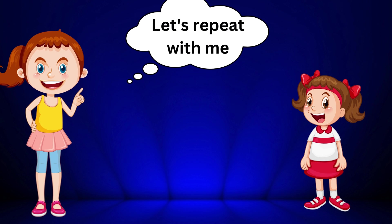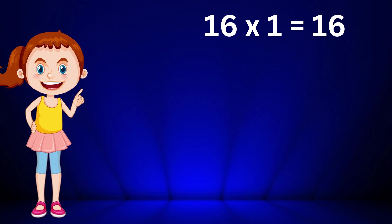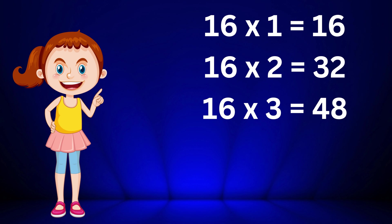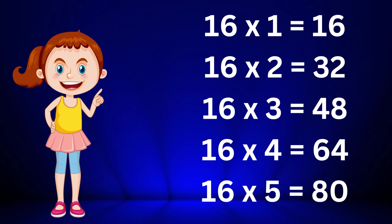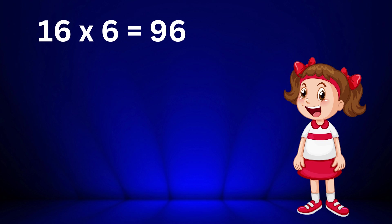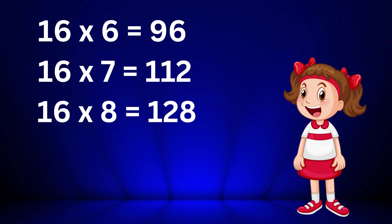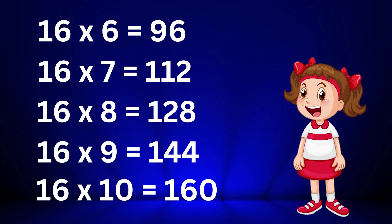Let's repeat with me: sixteen ones are sixteen, sixteen two's are thirty-two, sixteen three's are forty-eight, sixteen four's are sixty-four, sixteen five's are eighty, sixteen six's are ninety-six, sixteen seven's are one hundred twelve, sixteen eight's are one hundred twenty-eight, sixteen nine's are one hundred forty-four, sixteen ten's are one hundred sixty.